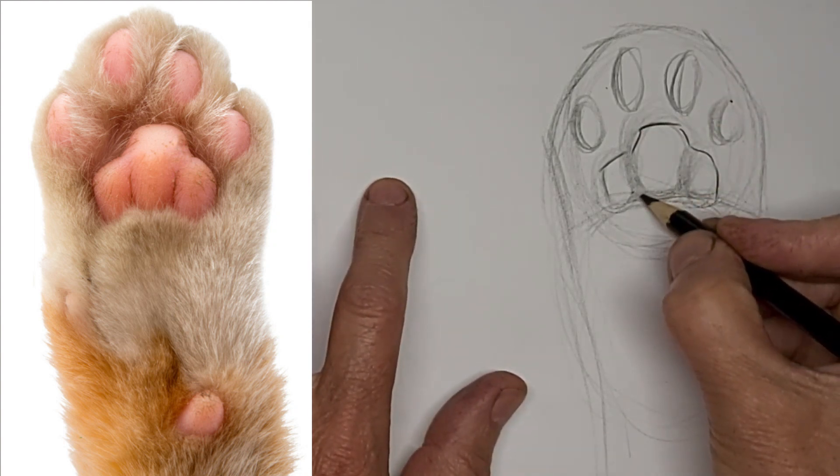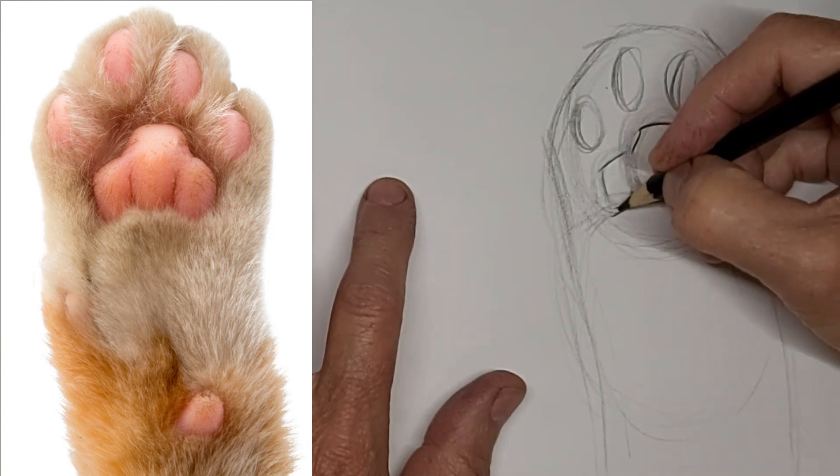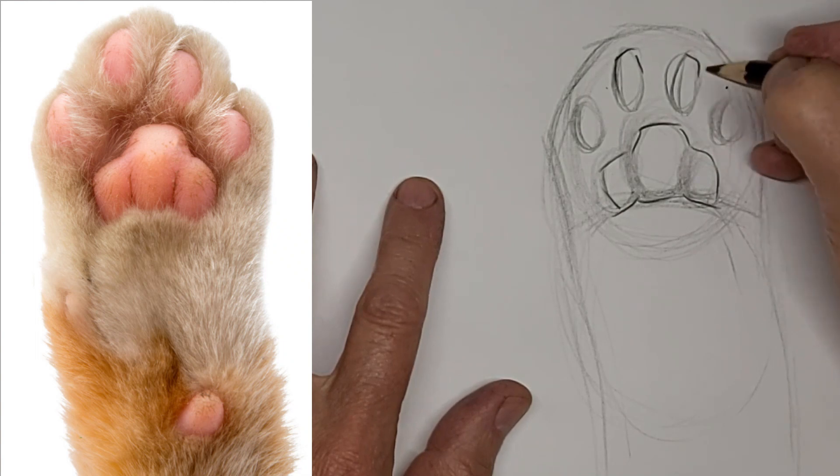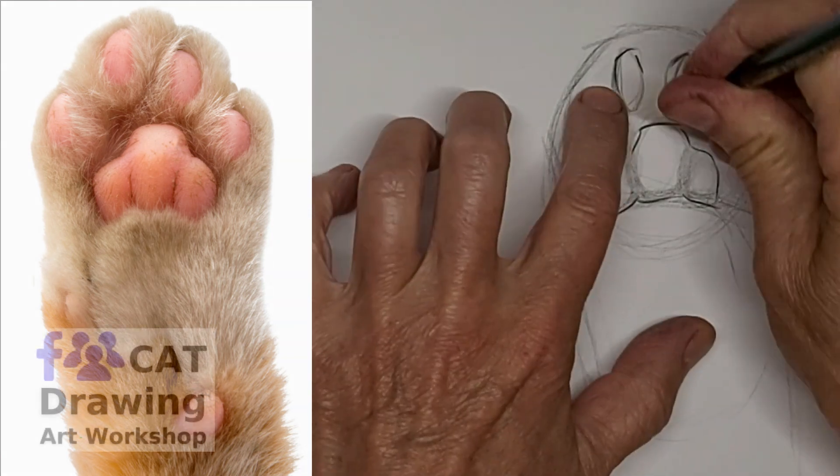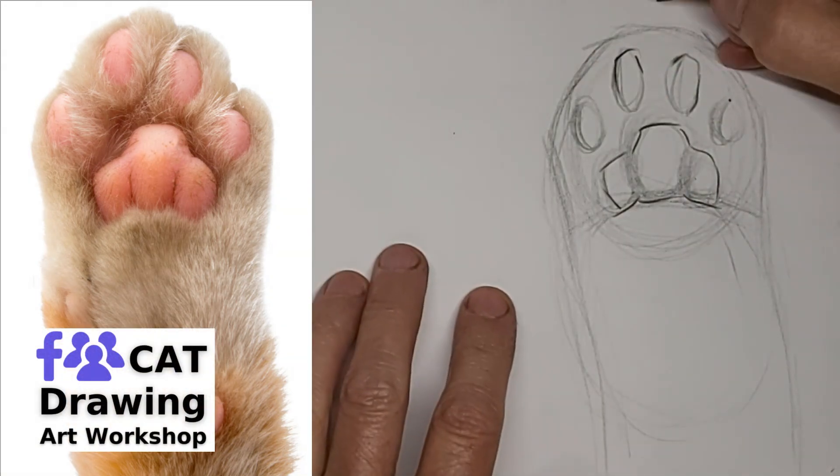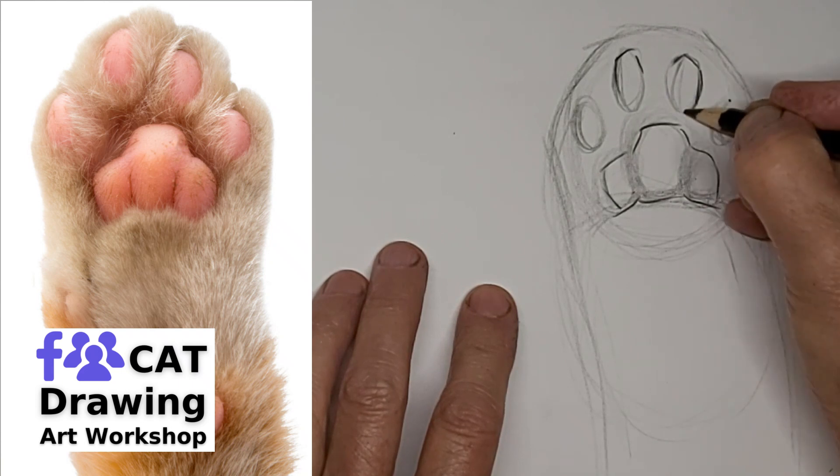And then we'll darken up around the edges to help shape those pads. And the toe beans. And I don't outline them all the way around really strongly, because I want to be able to give a suggestion of hair coming over them on the edges.